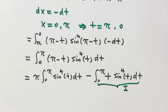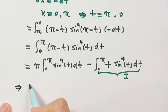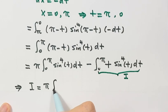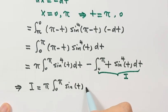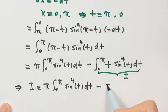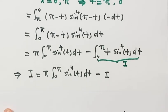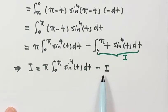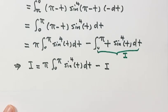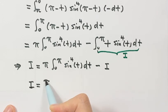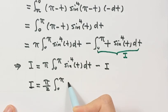So that means we have I equals the new integral of sine to the fourth, plus I. Solving for I: add I to both sides to get 2I, then divide both sides by 2. So we have I equals one-half times π times the new integral.